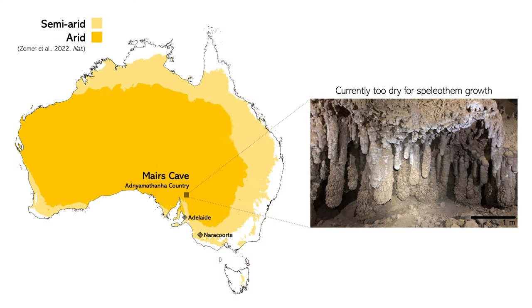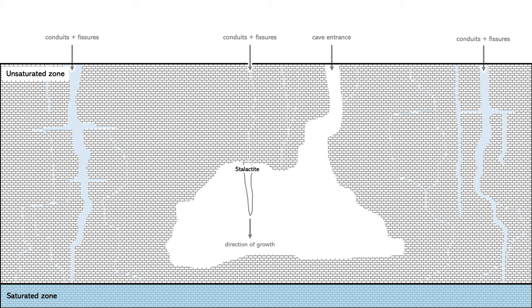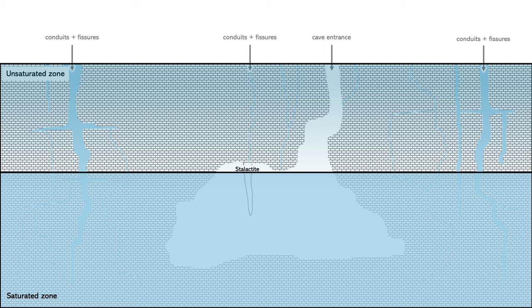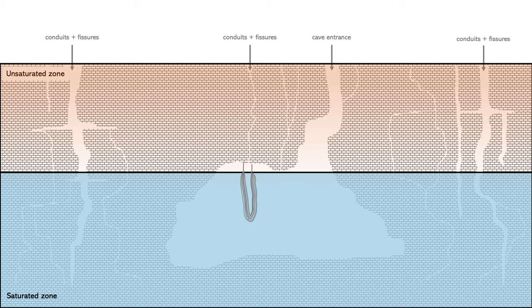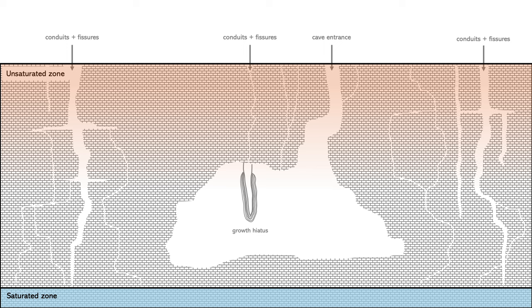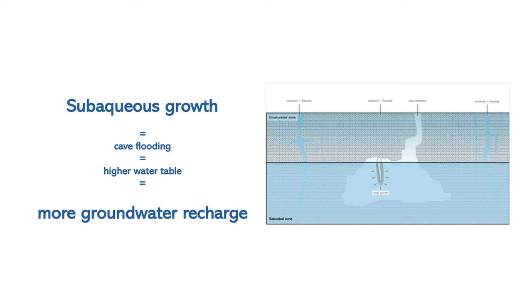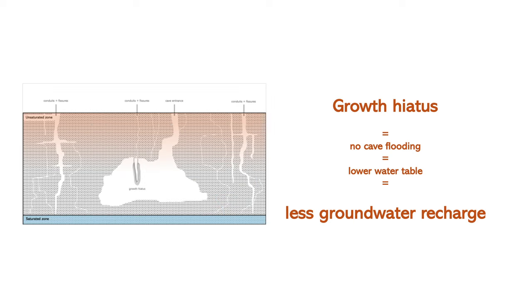These are quite unique formations called pendulites. They begin as stalactites hanging from the ceiling of the cave with a downward direction of growth. Then at some point, there's an increase in water infiltration, which causes the water table to rise and flood the cave so that the stalactite is submerged in groundwater. From that point forward, calcite is precipitated subaqueously on the existing stalactite surface, with a radial growth direction. Then a decrease in groundwater recharge causes the water table to drop and there's a hiatus in subaqueous speleothem growth. So phases of subaqueous growth are evidence of cave flooding from higher groundwater recharge, while hiatuses indicate lower groundwater recharge.